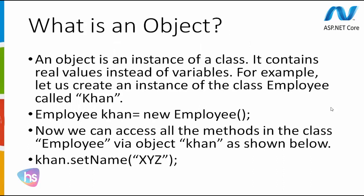What is an object? This is a very important question in object-oriented programming languages — not only C-Sharp, but any other programming language has the same question and answer. An object is an instance of a class. It contains real values instead of variables. For example, we will create an instance of a class called Employee.